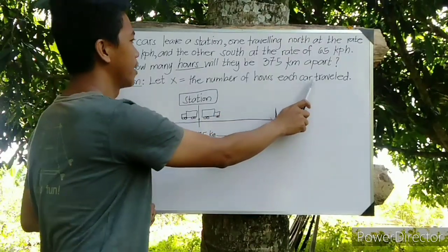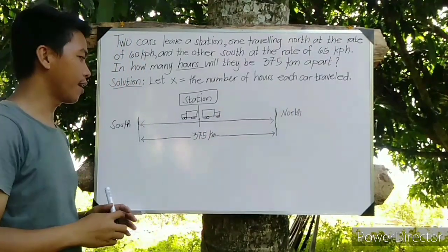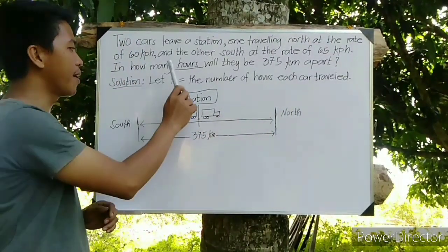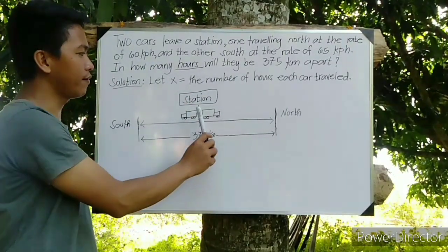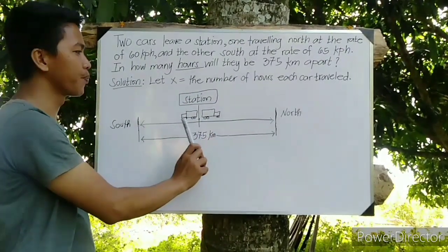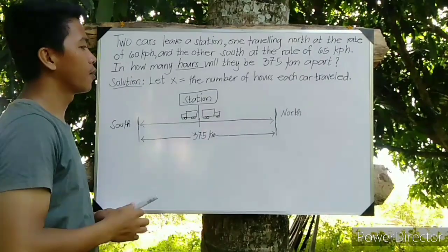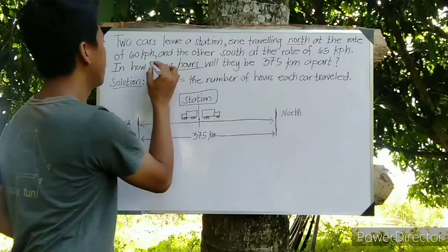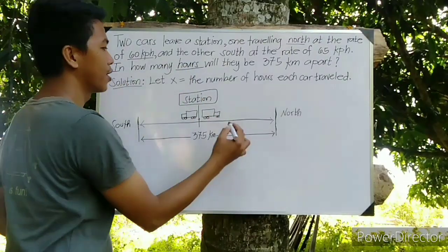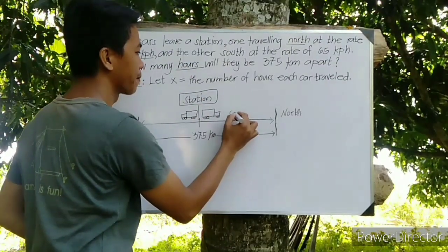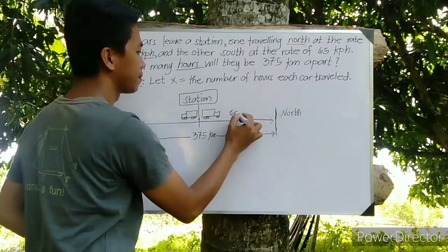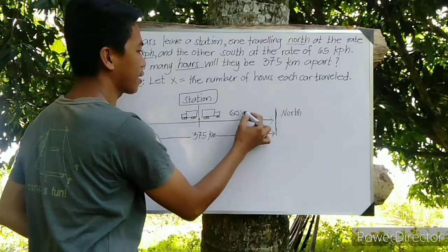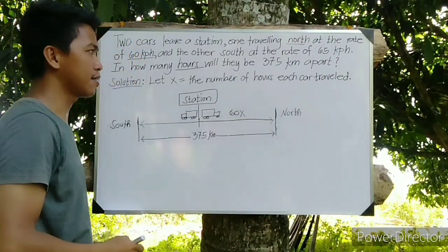So I have here the sketch of that problem. As you can see we have the station and two cars moving towards opposite directions, one is going to the north at the rate of 60 kilometers per hour. So we have to write here 60 times X, that is the number of hours this car traveled.